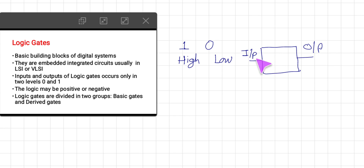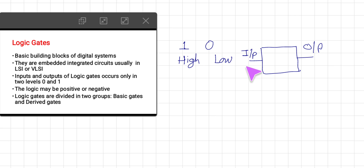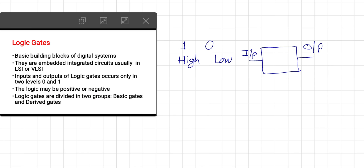In digital electronics, in logic circuits, the inputs are either one or zero — high state or low state. There may be one or more inputs, but the output is always a single output. The logic may be positive or negative, meaning in digital electronics there is a one state and a zero state.